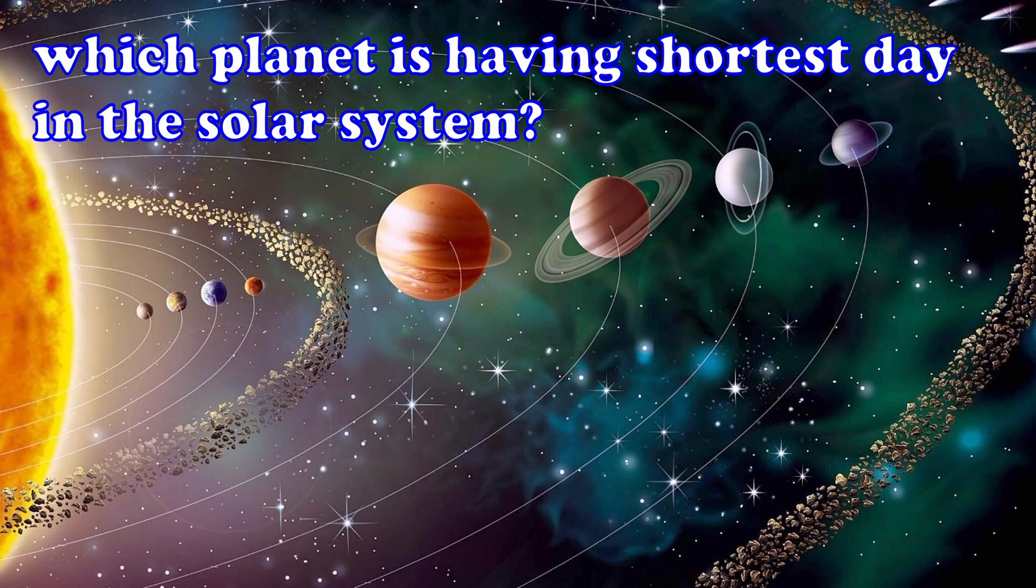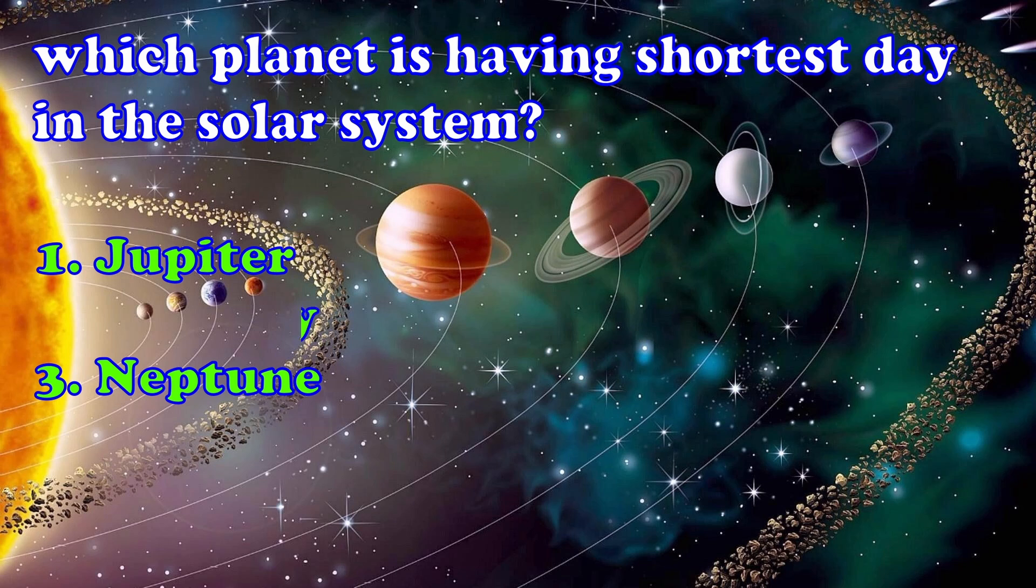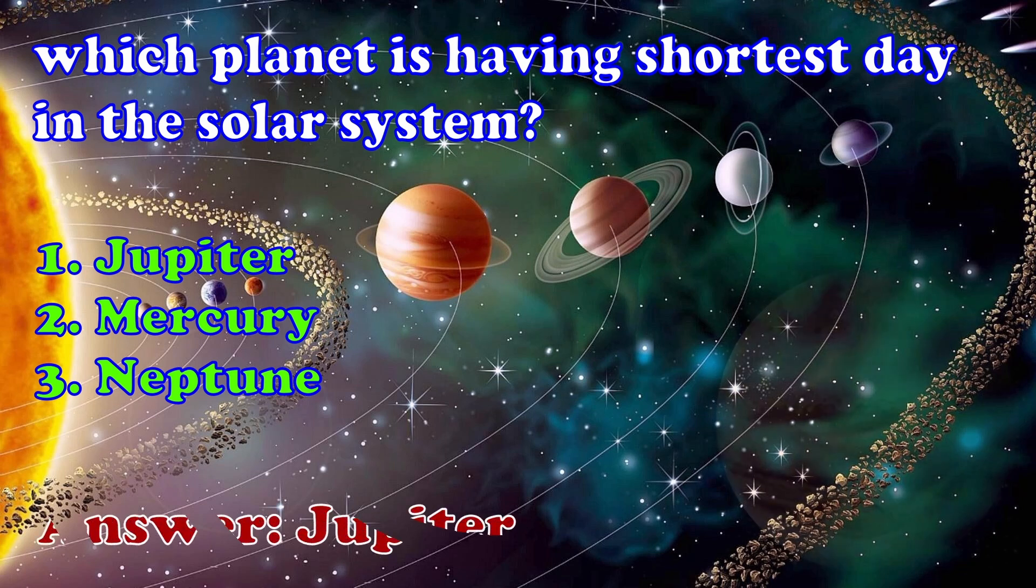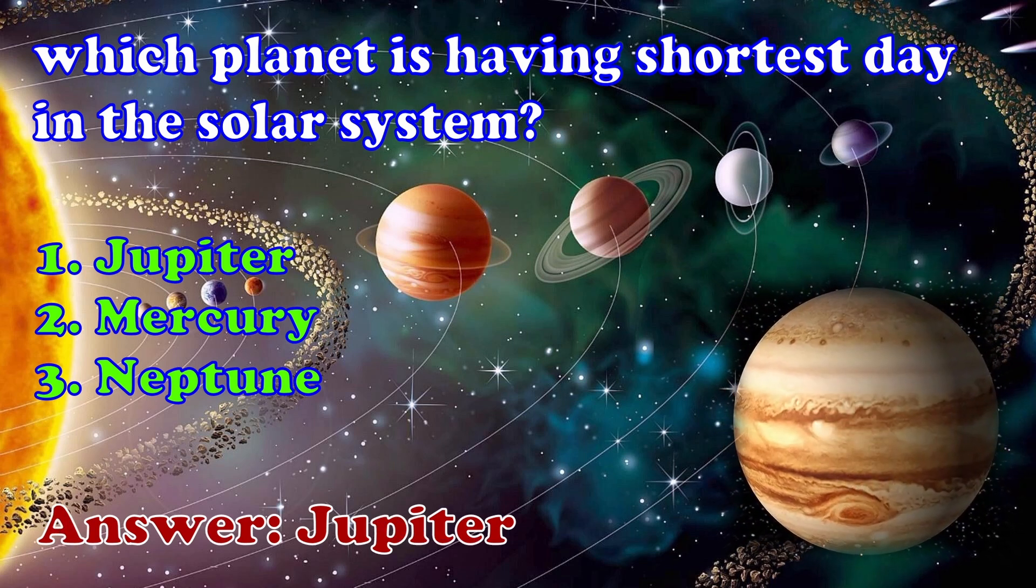Which planet is having shortest day in the solar system? 1. Jupiter, 2. Mercury, 3. Neptune. Answer is Jupiter.